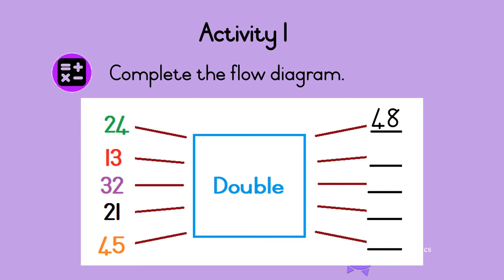What is double 13? First double the first digit. So double 1 is 2. Then double the second digit. Double 3 is 6. Great! So double 13 is 26.